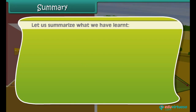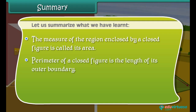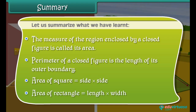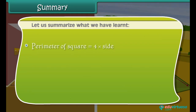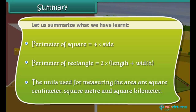Let us summarize what we have learned. The measure of the region enclosed by a closed figure is called its area. Perimeter of a closed figure is the length of its outer boundary. Area of a square equals side × side. Area of a rectangle equals length × width. Perimeter of a square equals 4 × side. Perimeter of a rectangle equals 2 × (length + width). The units used for measuring area are square centimeter, square meter, and square kilometer.